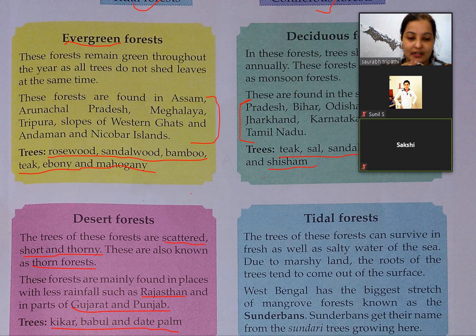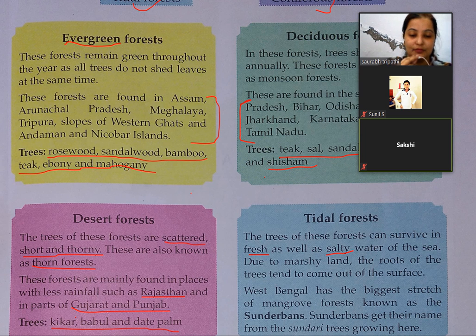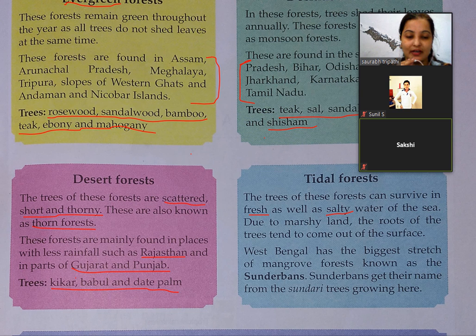Tidal forests: the trees of these forests can survive in both fresh and salty water of the sea. Due to marshy land, the roots of the trees tend to come out of the surface. West Bengal has the biggest stretch of mangrove forest known as the Sundarbans, which gets its name from the Sundari trees growing there. Tidal forest ko mangrove forest bhi kehte hain.